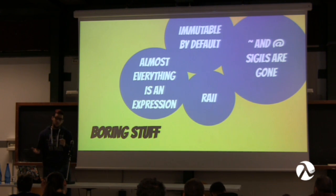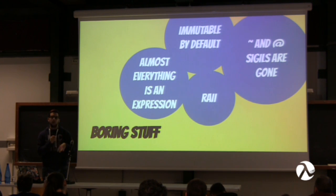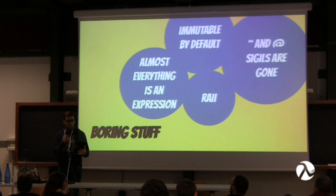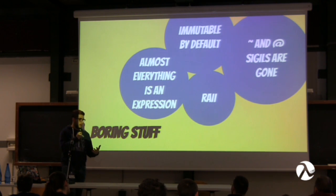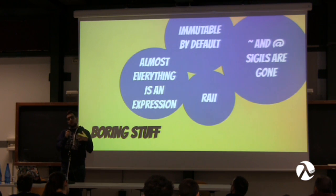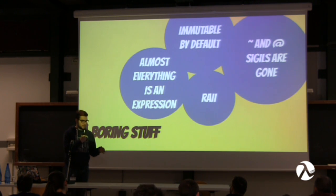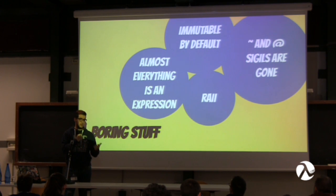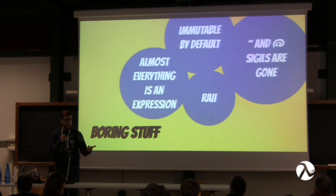Almost everything in Rust is an expression. The most common statements are just two, and everything else is an expression — the for loop can be an expression, if is an expression, a match is an expression. The most common expression is the let binding, which is not just a way to define variables but is also pattern matching by itself. The second common statement is the semicolon, which ends an expression when you don't want to return a value from it.